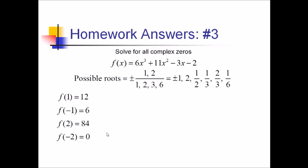That means if I divide synthetically with negative 2 as my box number, I should get a remainder of zero. So let's go ahead and do that so we can get the quotient. So our coefficients, we've got 6, 11, negative 3, and negative 2. Box number is negative 2. Let's bring down that 6 to start us off. Times negative 2 gives me negative 12. Plus 11 is negative 1. Times negative 2 is 2. Plus negative 3 is still negative 1. Times negative 2 is positive 2. And there we have it, the zero for the remainder.